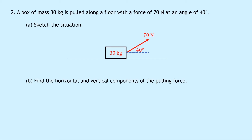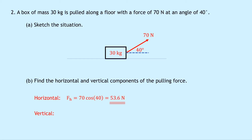This is exactly what we did in question one. To find the horizontal component we're going to use cosine because cos goes across. So we've got FH equals 70 cos 40, which is equal to 53.6 newtons. For the vertical we have FV equals 70 sine 40, which equals 45.0 newtons.